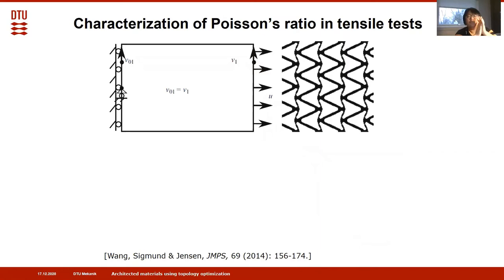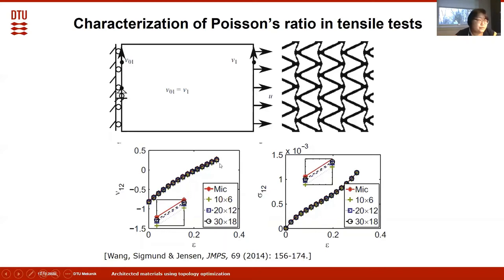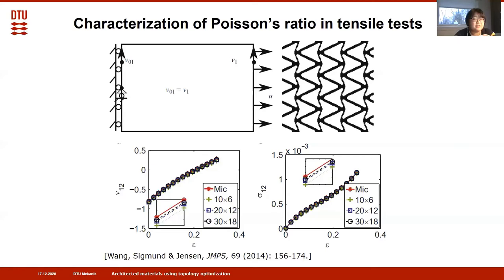However, an interesting question arises: previous designs were performed considering small strains. If we stretch the samples significantly, how will these materials perform under finite strains? In a numerical test, stretching up to 30% strain, we can see the well-known fishbone design shows a highly nonlinear Poisson ratio profile with respect to strain—it even becomes positive after a certain strain level. In the coming part, I will present an optimization procedure to design materials with a constant Poisson ratio over a certain strain range for finite deformations.